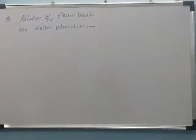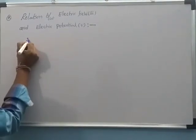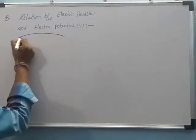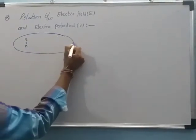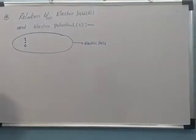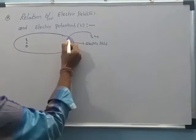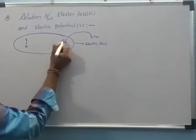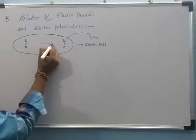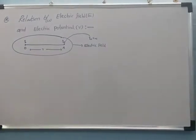Let us consider a point O where charge Q is placed. Around this charge Q, an electric field is produced. Now consider another charge Q₀ brought from infinity into the electric field to a point A. The two charges Q and Q₀ are separated by a small distance r.